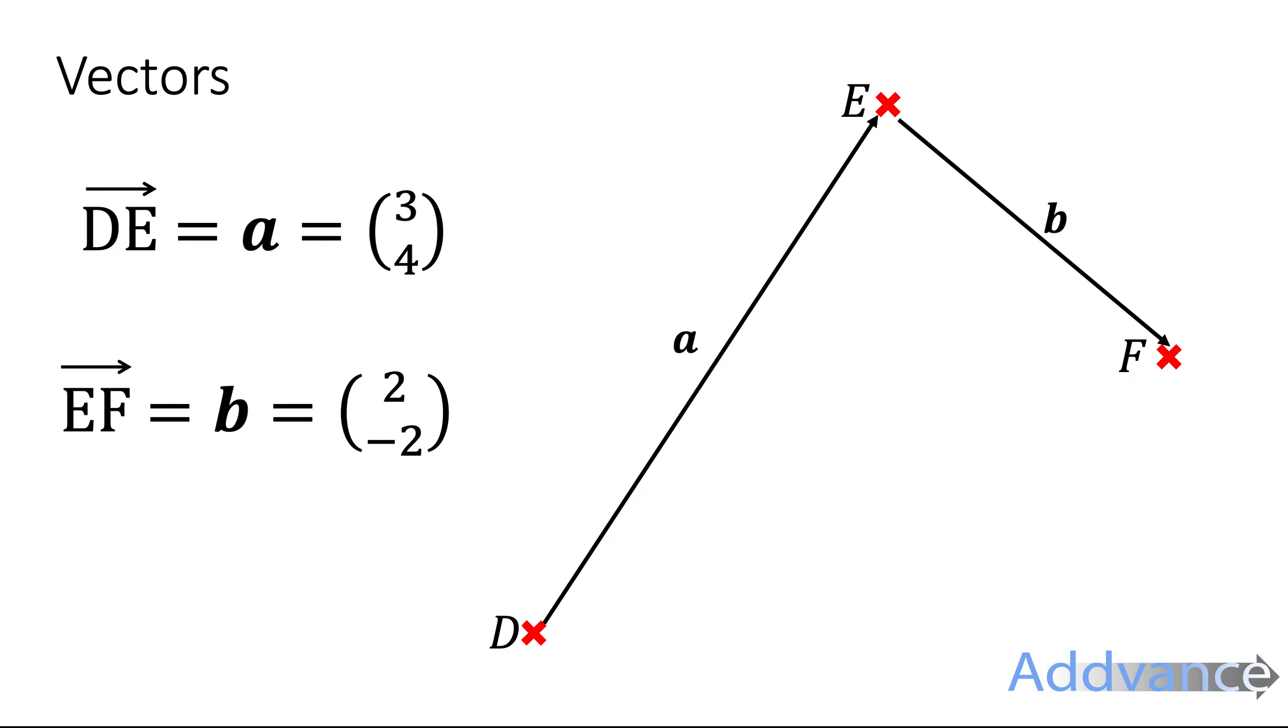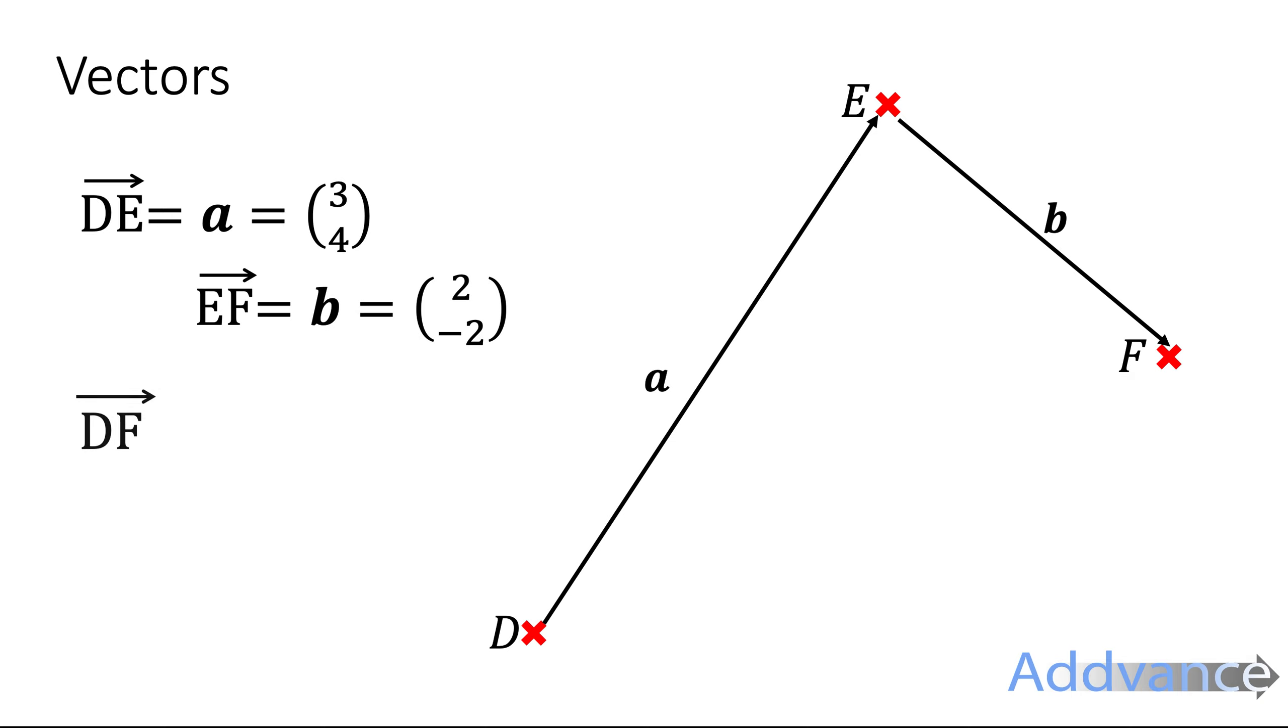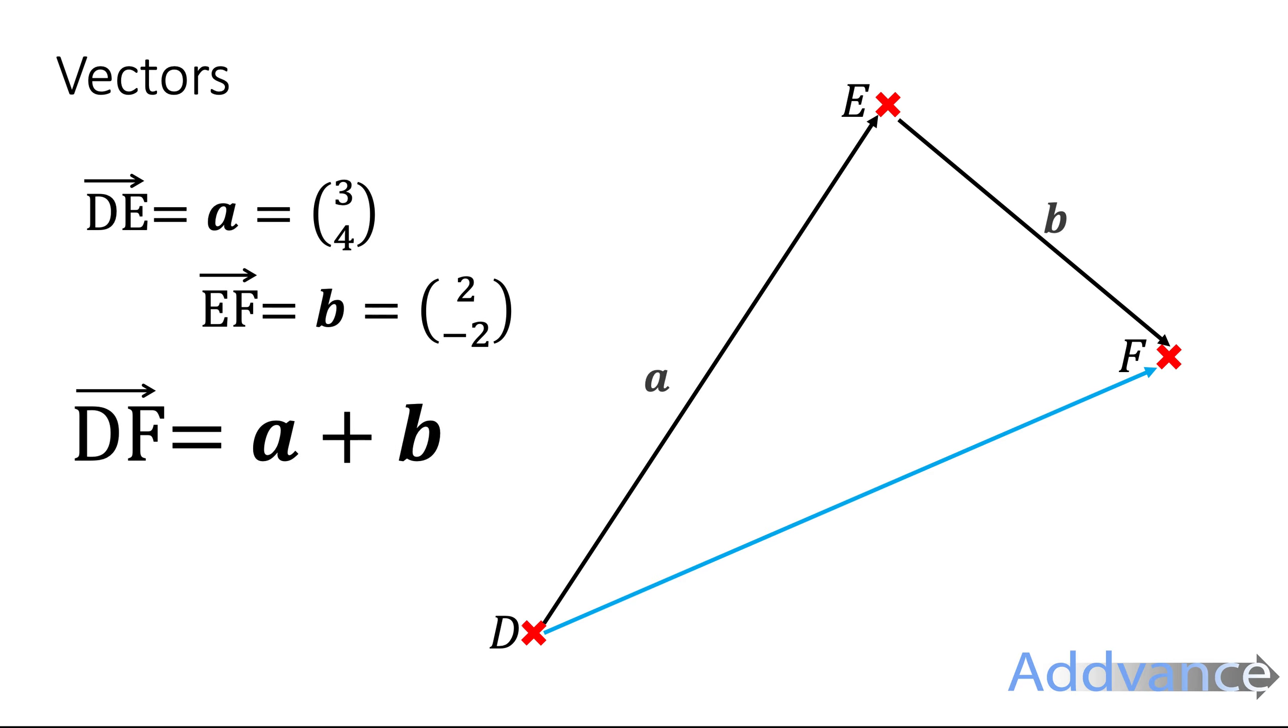Okay now what happens if you wanted to go from D to F? D to F would be going up a and then down b and so we can write D to F in terms of a and b by writing a plus b because to get to F you go up a and then you go across b.